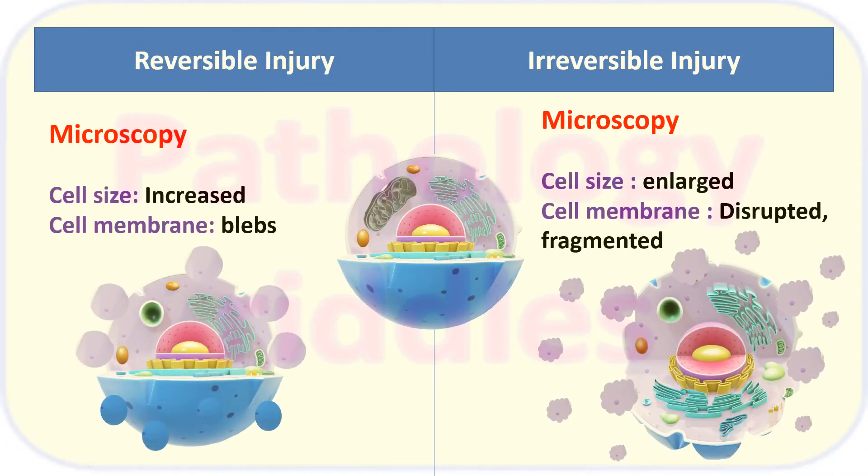In microscopy, in reversible injury the cell size will be increased — as fluid homeostasis is affected, more and more fluid accumulates inside the cell — and the cell membrane will start showing some blebs.